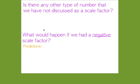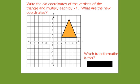So if we had a negative scale factor, what do we think would happen? Let's take a look at the triangle on your note sheet. We're going to write the old coordinates and multiply everything by negative 1. The reason we multiply by negative 1 is to see the effect of a negative scale factor on the shape itself, without changing the size.